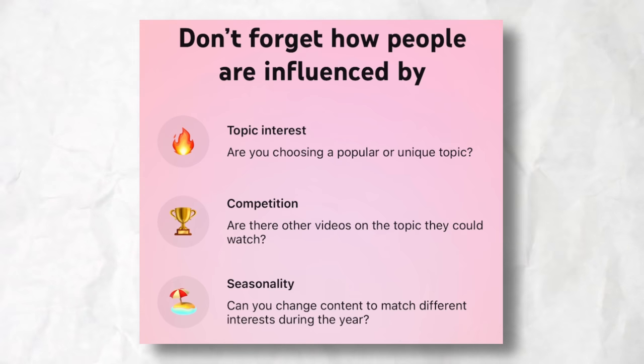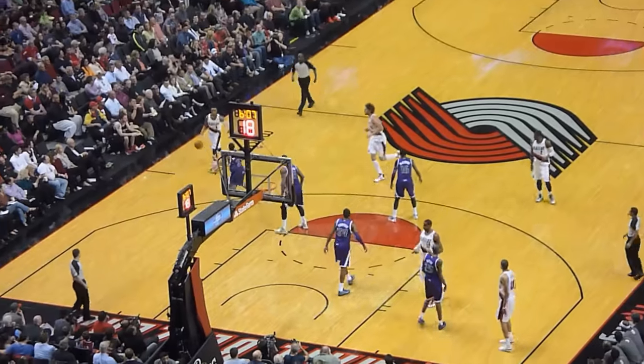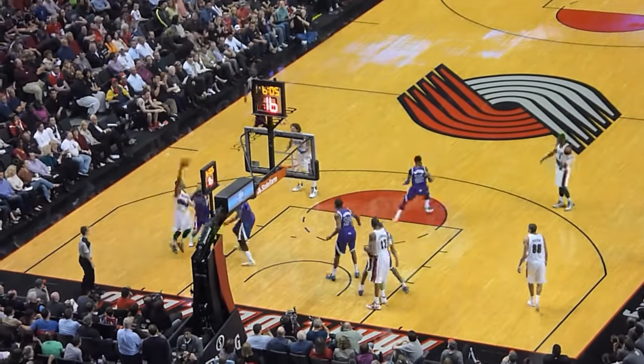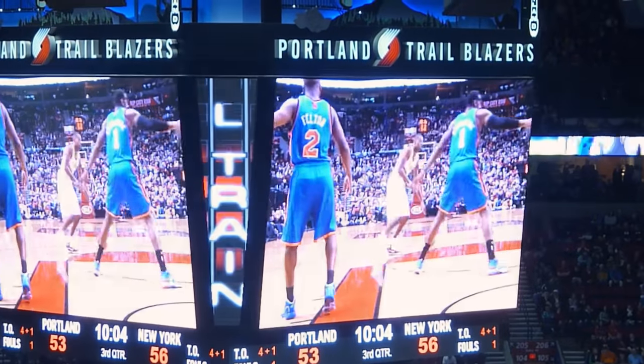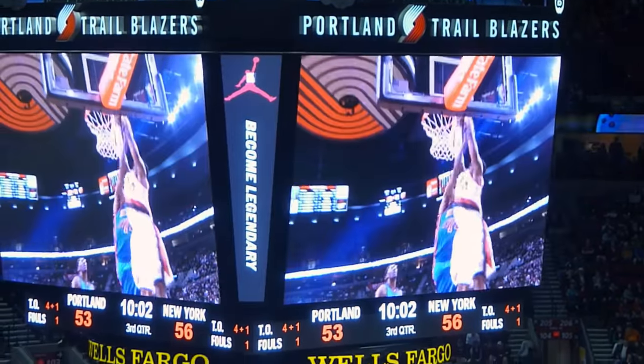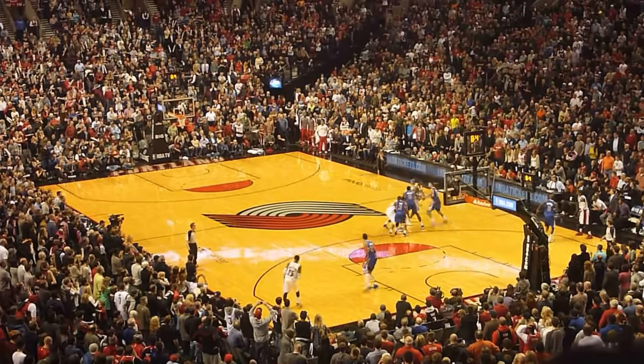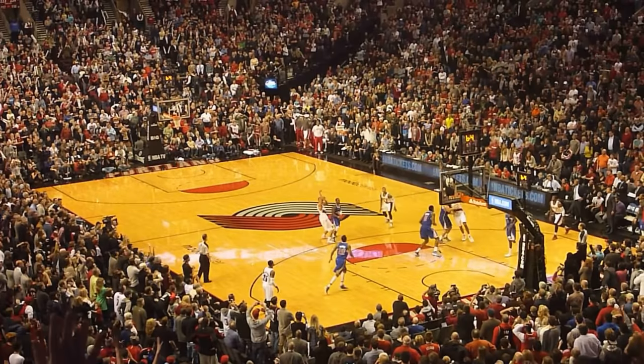The third thing is seasonality — can you change content to match different interests during the year? This goes back to trend surfing and making sure you're talking about things that people are interested in during that specific time of the year. For example, I have a basketball channel and there's a lot more interest when the NBA season starts, and then it might die off, but picks back up during the playoffs and the finals. Because people are interested in that specific topic during that season, I want to make sure I'm covering those subjects on my YouTube channel.